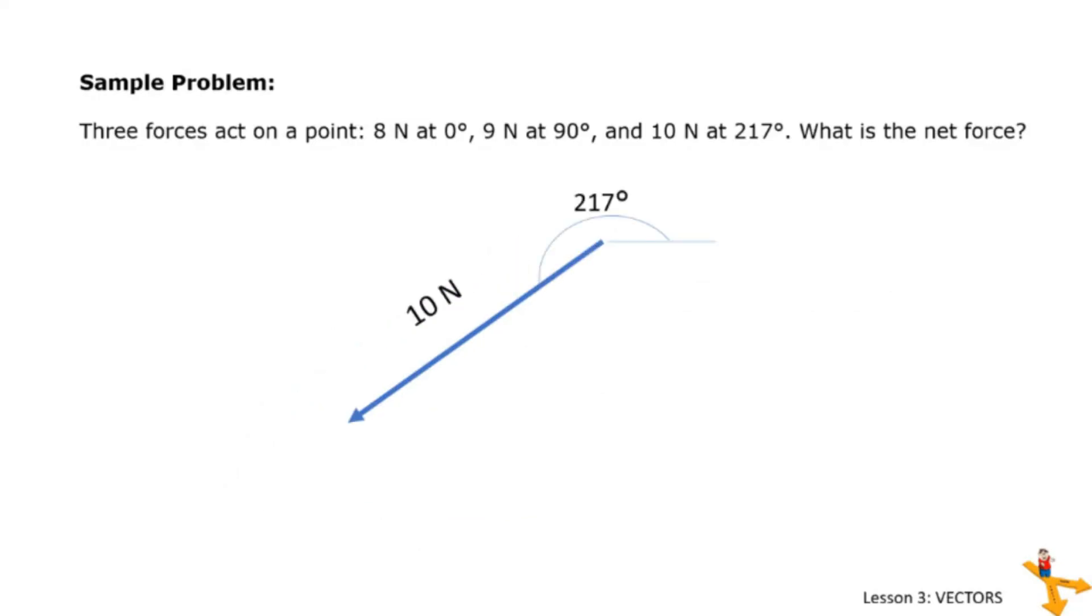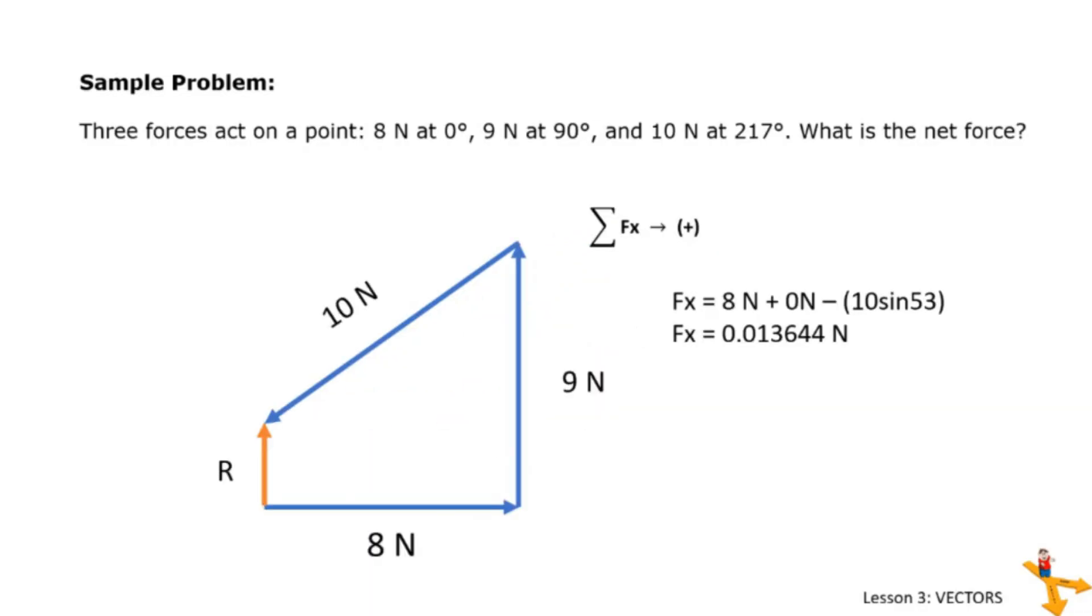To get Fx, remember that the position of the force 10 newtons is at 217 degrees. Now locating the x component, we draw a yellow dashed line and a red dashed line for the y component. To be able to use sine, we need to get the angle between the hypotenuse and the y component. Subtracting 217 from 270, we get 53. Now we can write Fx equals 10 sin 53. The summation of Fx is 0.013644 newtons.